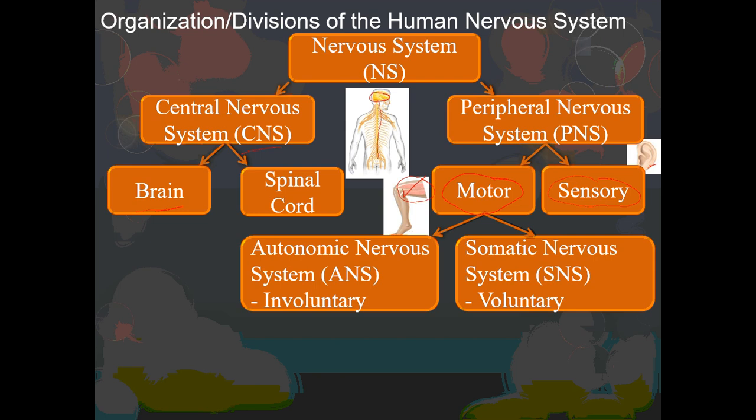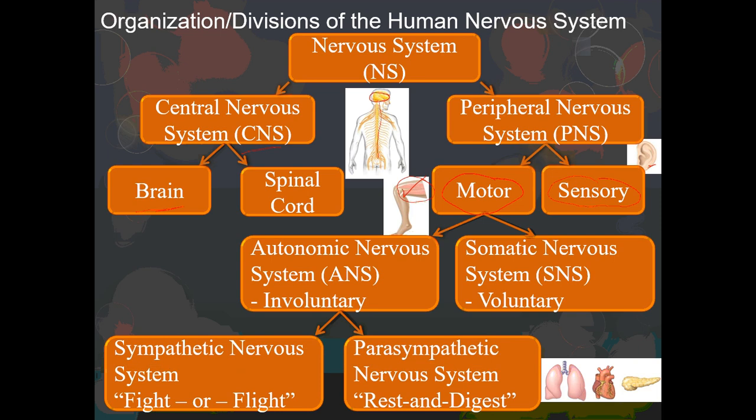In both cases, information is going from the central to the periphery. For the autonomic, it's not under voluntary control — involuntary. For somatic, it is under voluntary control. We have one more division: dividing the autonomic nervous system into what is referred to as the sympathetic nervous system and the parasympathetic nervous system. These are portions of the nervous system under involuntary control that involve the autonomic nervous system.